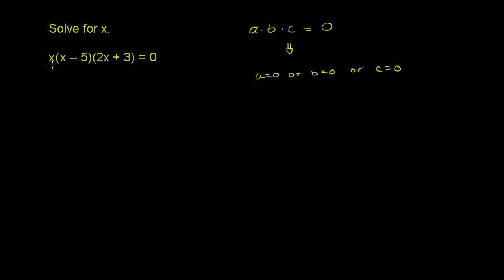So let's apply the same principle here. We have the product of three expressions. We have that expression there, we have that expression there, and that expression there. The product is equal to 0. So that tells us that either x is equal to 0, or x minus 5 is equal to 0, or 2x plus 3 is equal to 0.